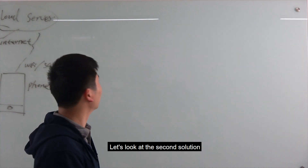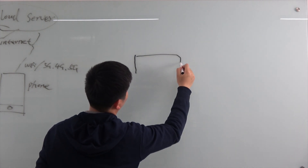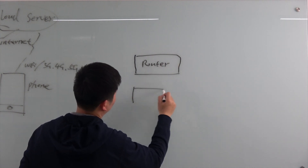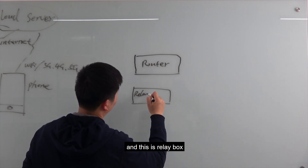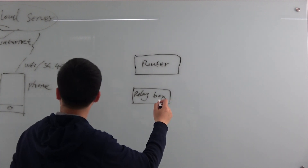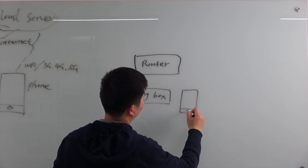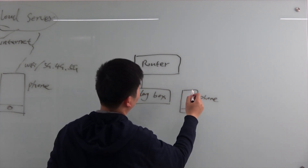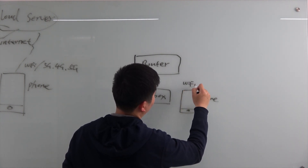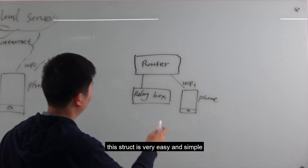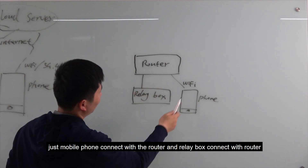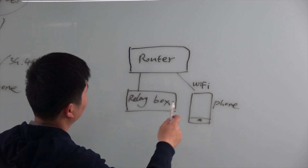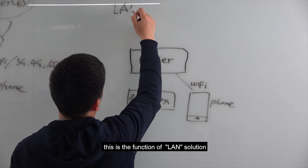Now let's look at the second solution. We also have a router, a relay box, and a mobile phone. This is your local network and this is your Wi-Fi connected to the router. This structure is very simple: the mobile phone connects to the router, and the relay box also connects to the router, all within the same local network.